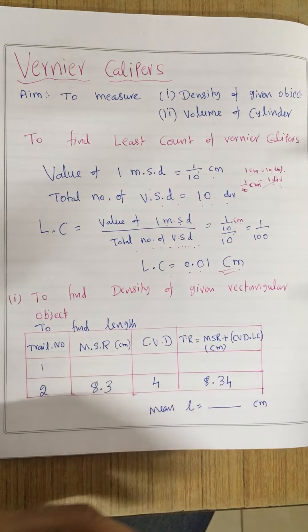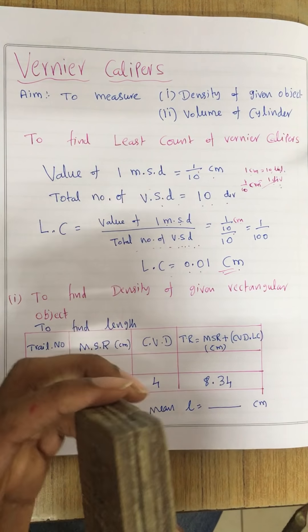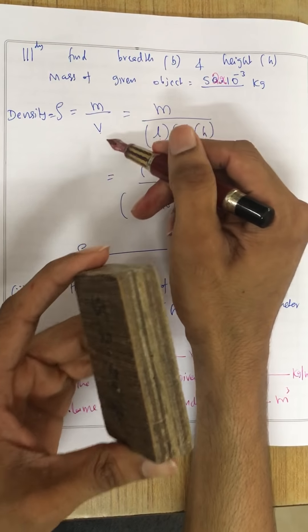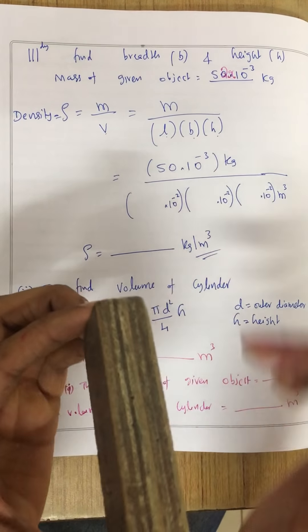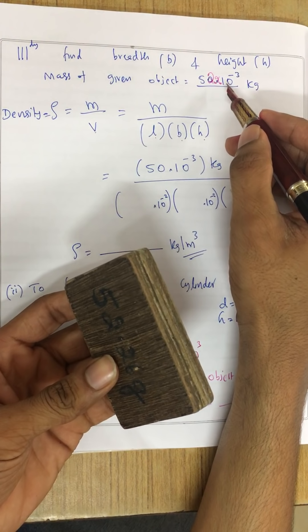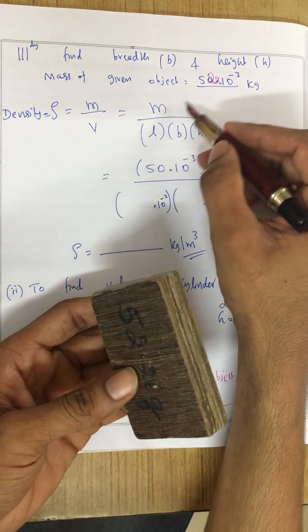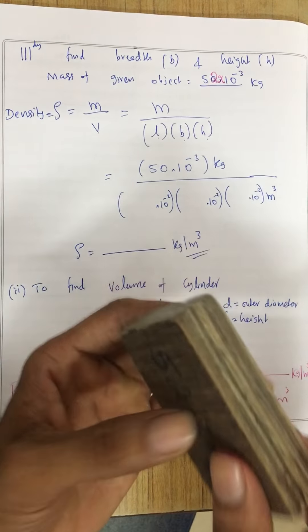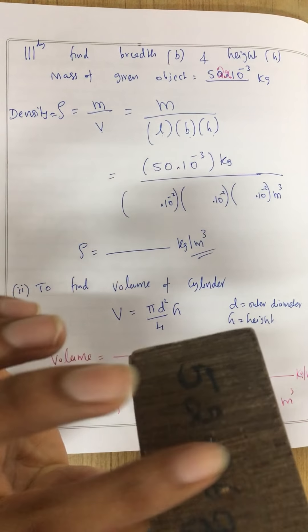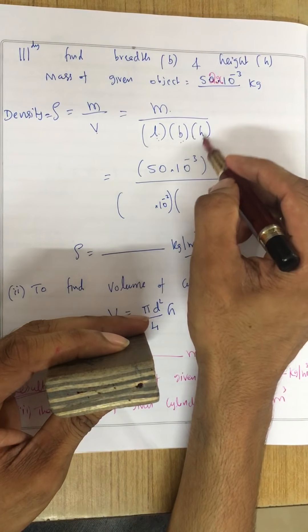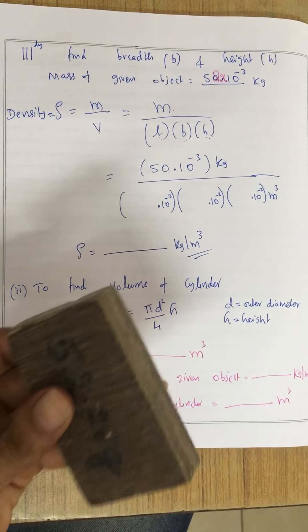Now we have to find out the density of this given rectangular object. We have the formula: density equals mass divided by volume. I have to find out both the mass and volume. Mass is actually 52.26 grams — you need to write it in terms of kilograms so you can directly substitute. Volume of this rectangular object is length multiplied by breadth multiplied by height or thickness. So I need to substitute all three. Mass I already have; length, breadth, and height I have to find out using the vernier calipers.